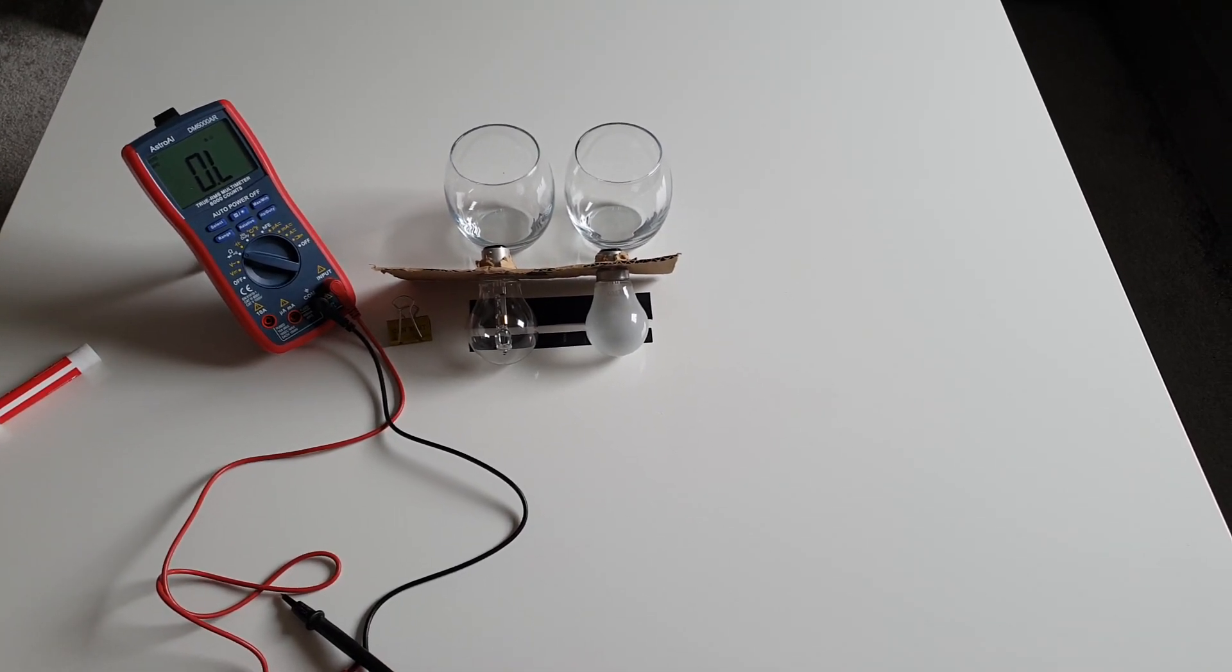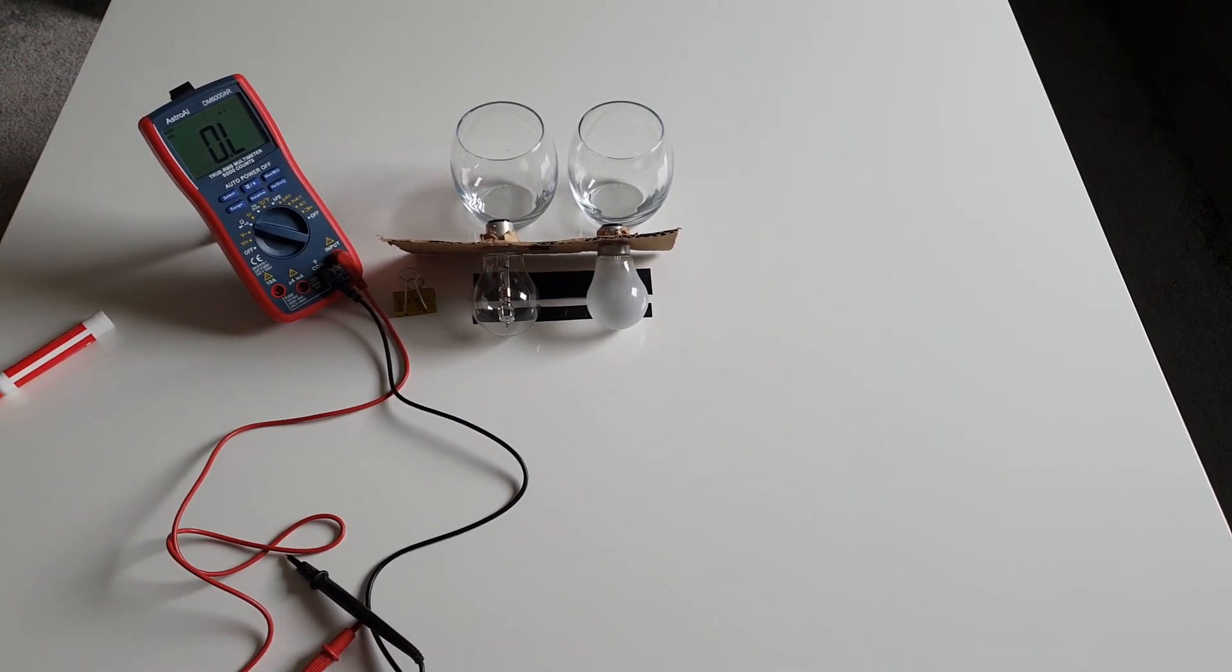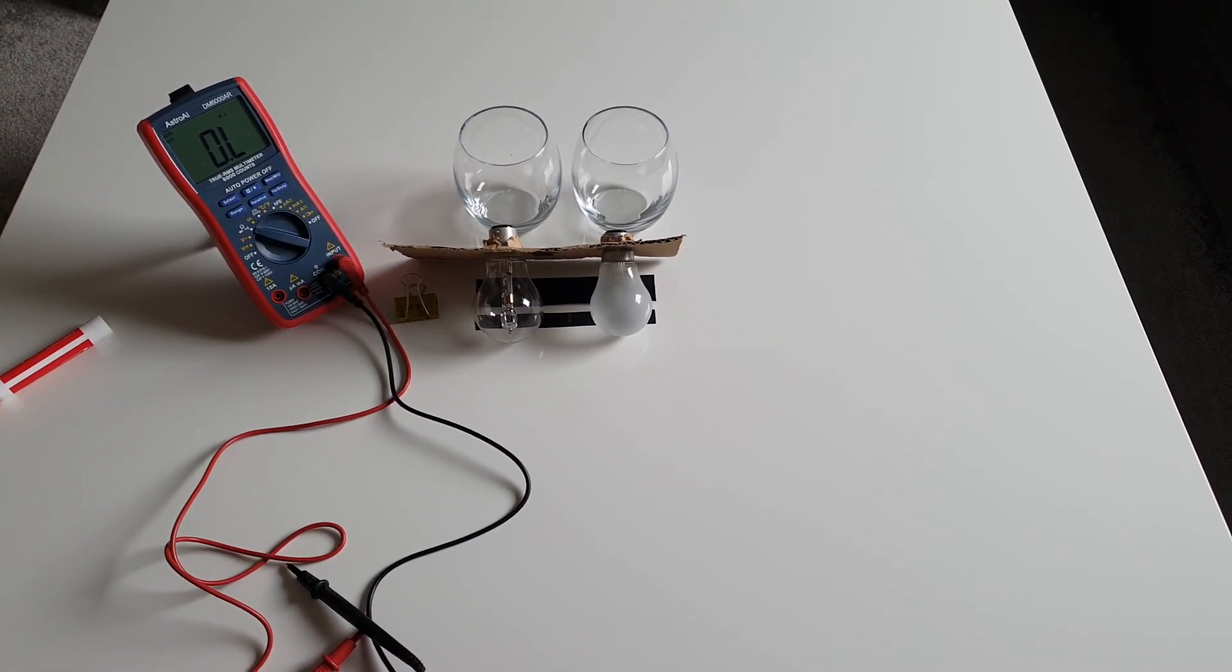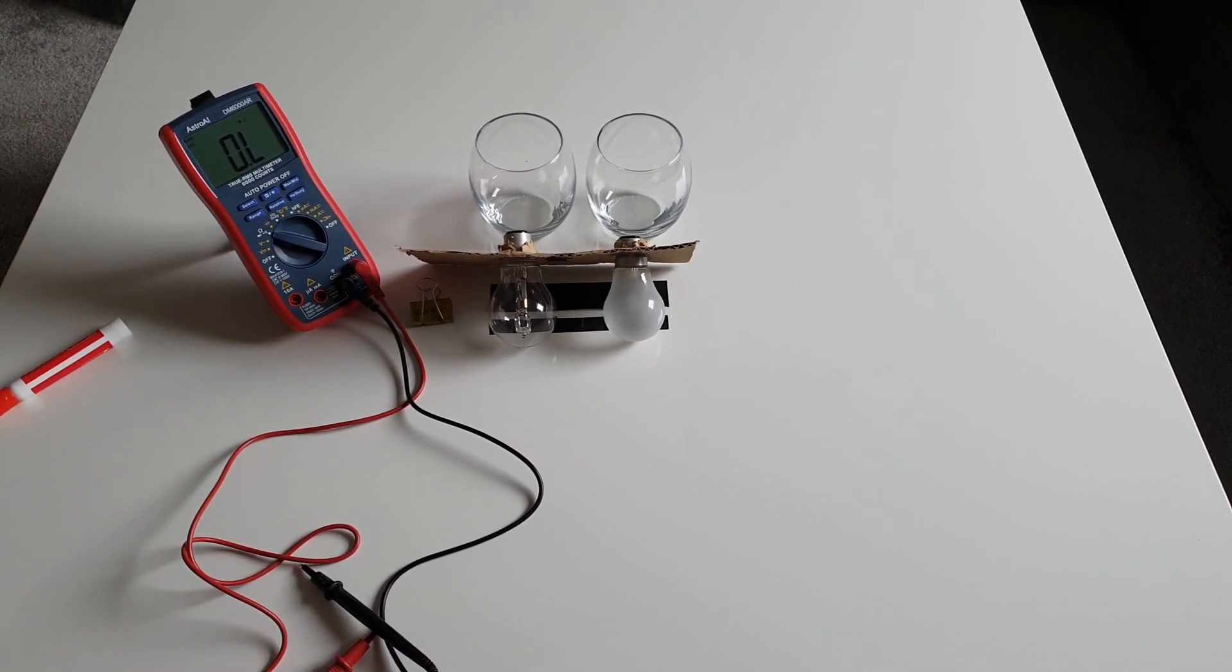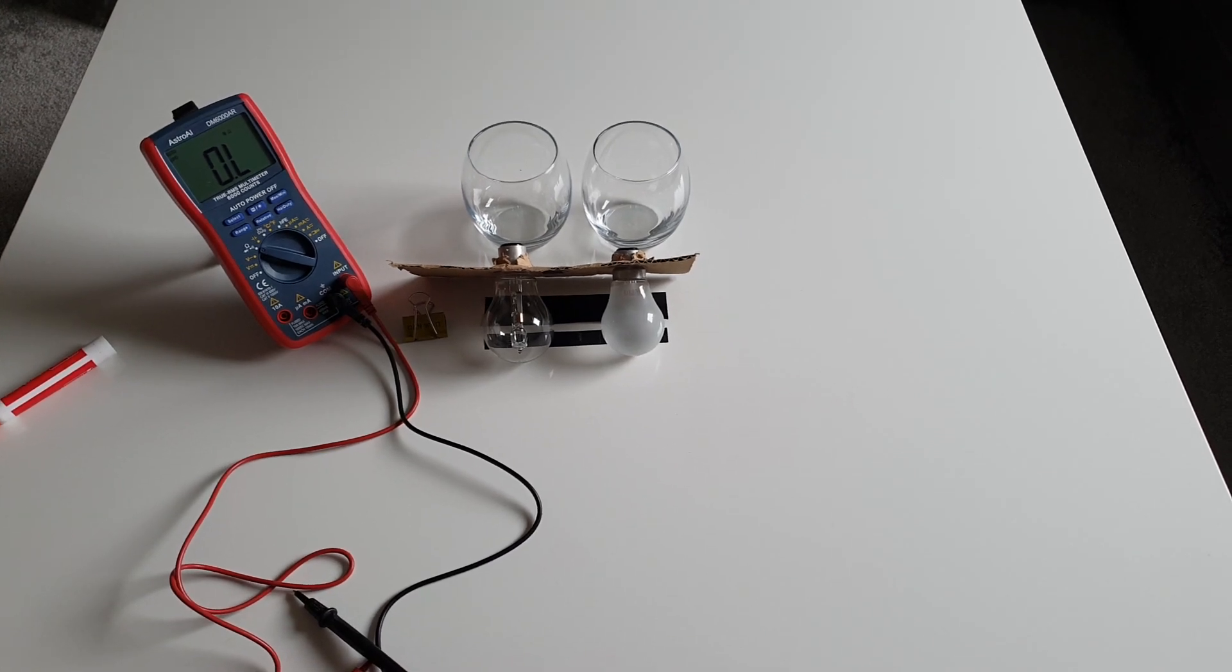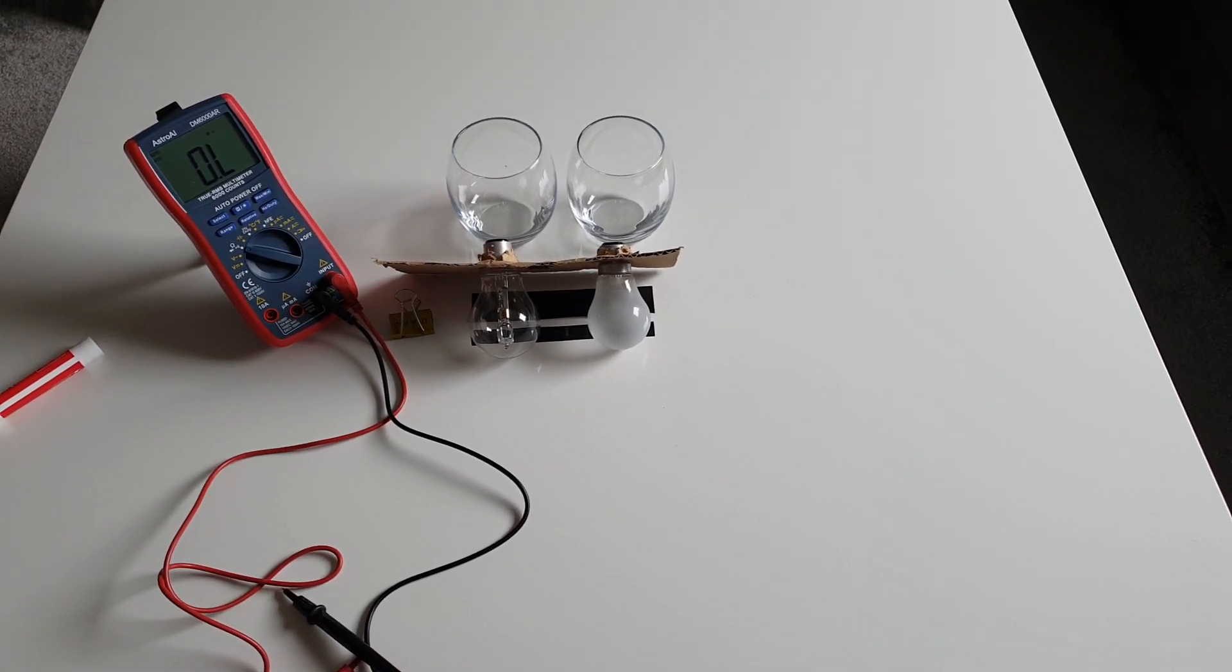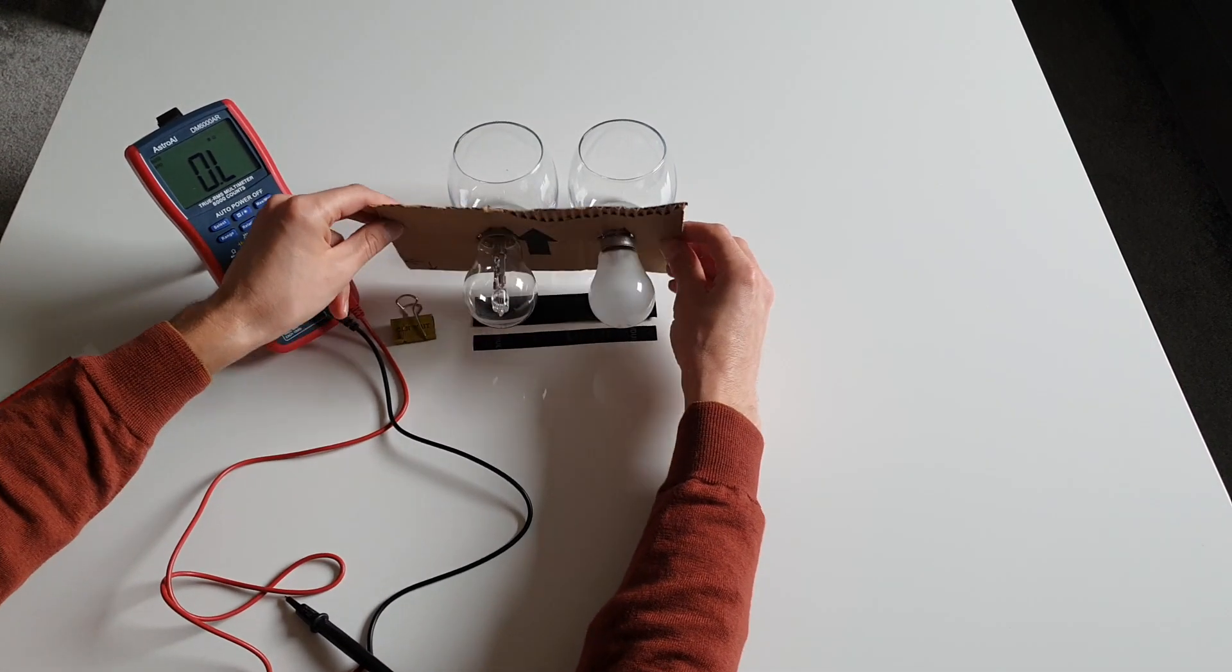So we can do a couple of small experiments just now, and the first part of this experiment will simply be to measure the resistance of a couple of resistors. So normally, if we were in school, then we could use resistors, electrical components. I'm at home, so I don't have that. What I do have is these light bulbs.